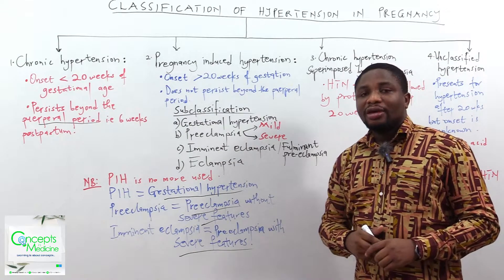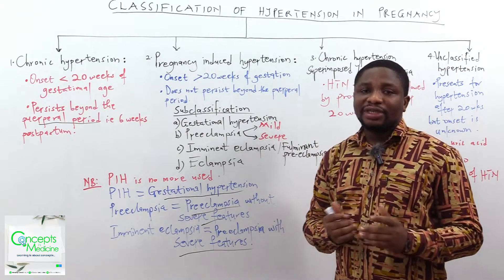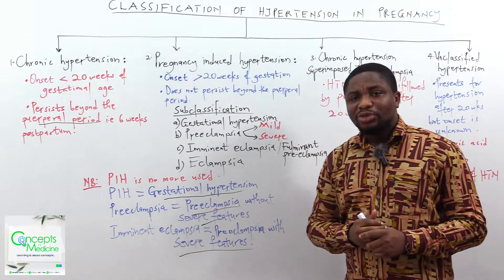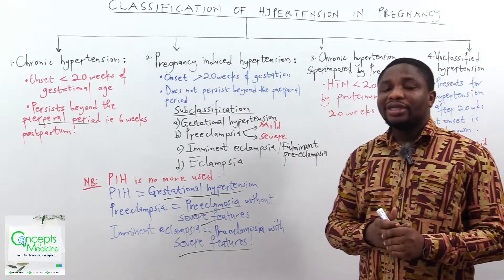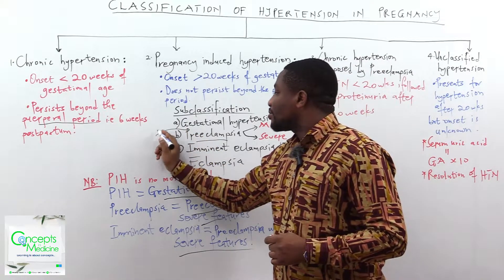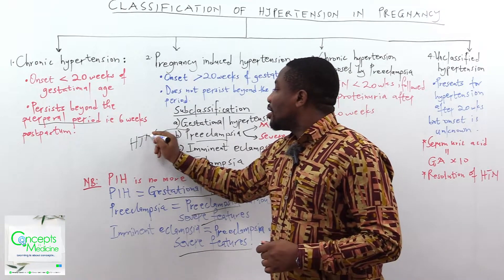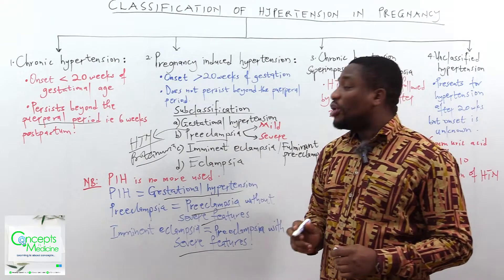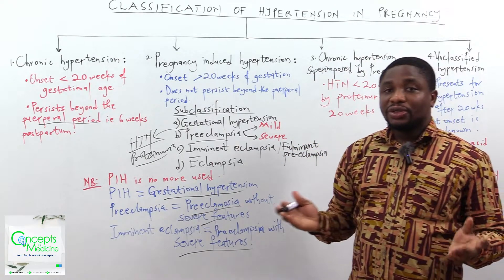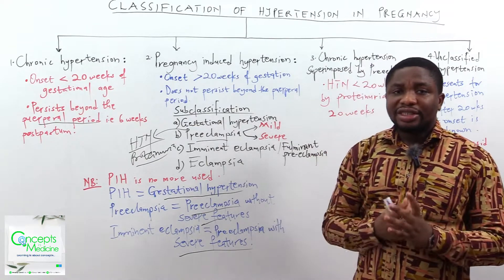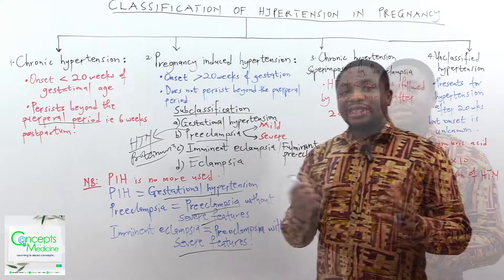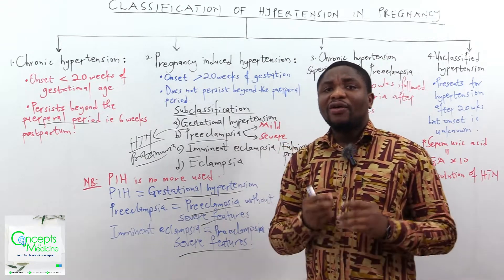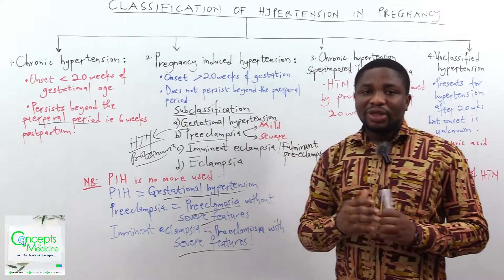Preeclampsia is a disorder of widespread vascular endothelial malfunction and vascular spasm that occurs after 20 weeks of gestation and resolves within the puerperal period. Clinically, preeclampsia is defined by hypertension and proteinuria with or without pathological edema. You are looking at hypertension occurring after 20 weeks of gestation, plus proteinuria of at least 0.3 gram per 24 hours or proteinuria of 1 plus, with or without pathological edema.